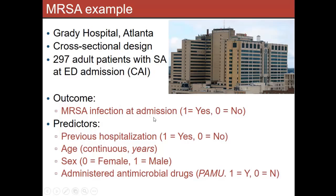We measured some other variables of interest. One is whether they had a previous hospitalization — yes or no, a binary variable. Another is their age. Their sex — zero for female, one for male. And another variable is whether within some time period, say 90 days, they were administered antibiotics — antimicrobial drugs — another binary variable. So we've got four variables here that are the predictors.